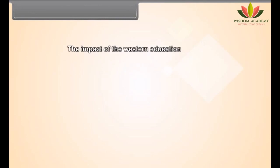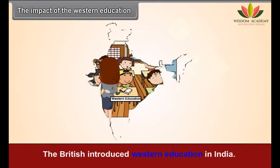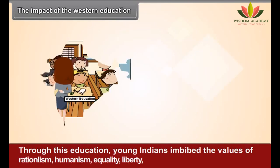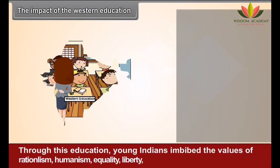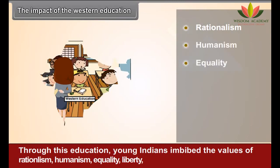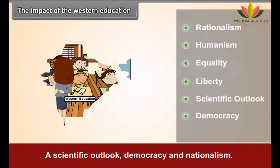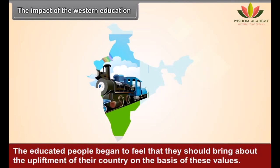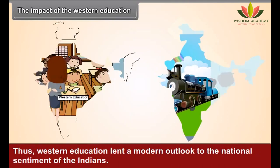The Impact of Western Education: The British introduced Western education in India. Through this education, young Indians imbibed the values of rationalism, humanism, equality, liberty, a scientific outlook, democracy and nationalism. The educated people began to feel that they should bring about the upliftment of their country on the basis of these values. Thus, Western education lent a modern outlook to the national sentiment of the Indians.